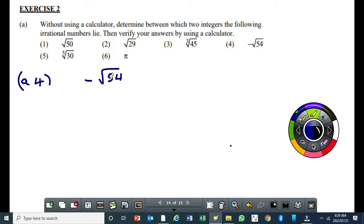First thing, we identify a positive perfect square which is greater than 54. Which perfect square is greater than 54 and it is close to 54? It's 64.